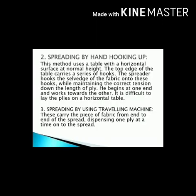Second: spreading by hand hooking up. This method uses a table with a horizontal surface at normal height. The top edge of the table carries a series of hooks. The spreader hooks the selvedge of the fabric onto these hooks while maintaining the correct tension down the length of the ply.